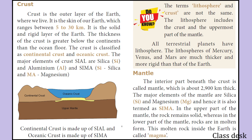Now let's go to the mantle. The mantle is a crustic layer about 2,900 km thick. The major elements are silica and magnesium, also called Sima. There is an upper mantle and a lower mantle. The upper mantle is thick and solid, while the lower mantle is in a molten state.